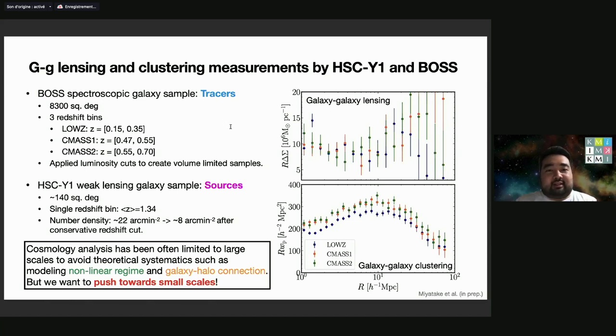The clustering signal is measured from these BOSS tracers. Using these tracers as foreground galaxies and then using the HSC ER1 source catalog as background galaxies, we can measure galaxy-galaxy lensing.